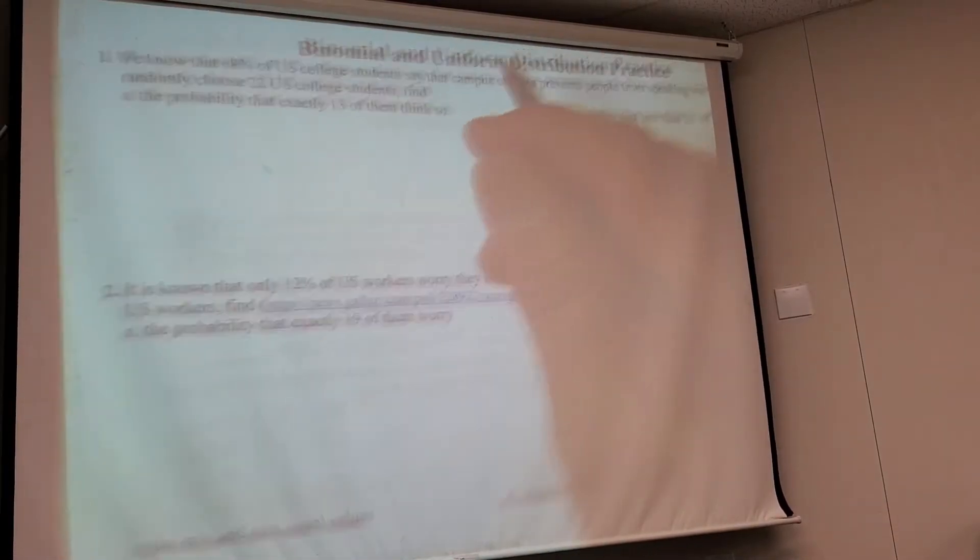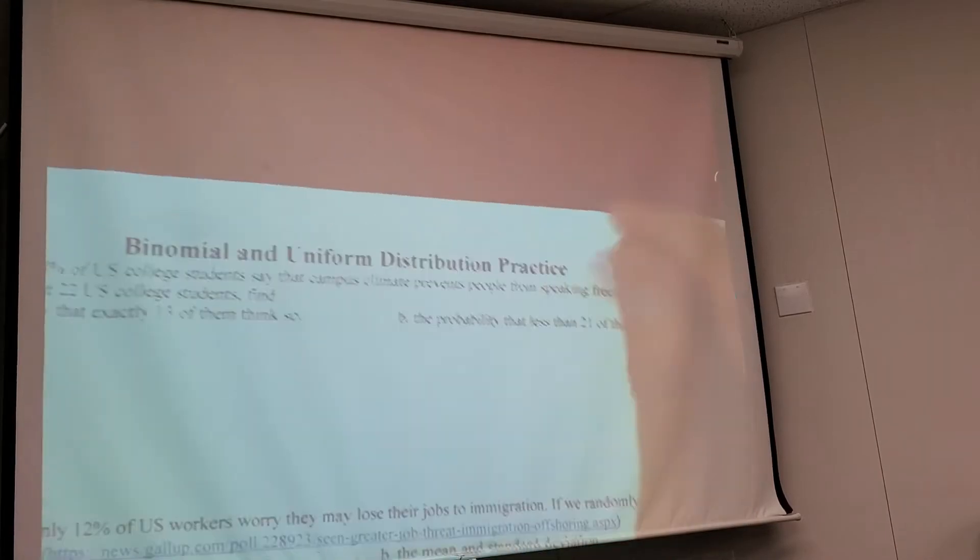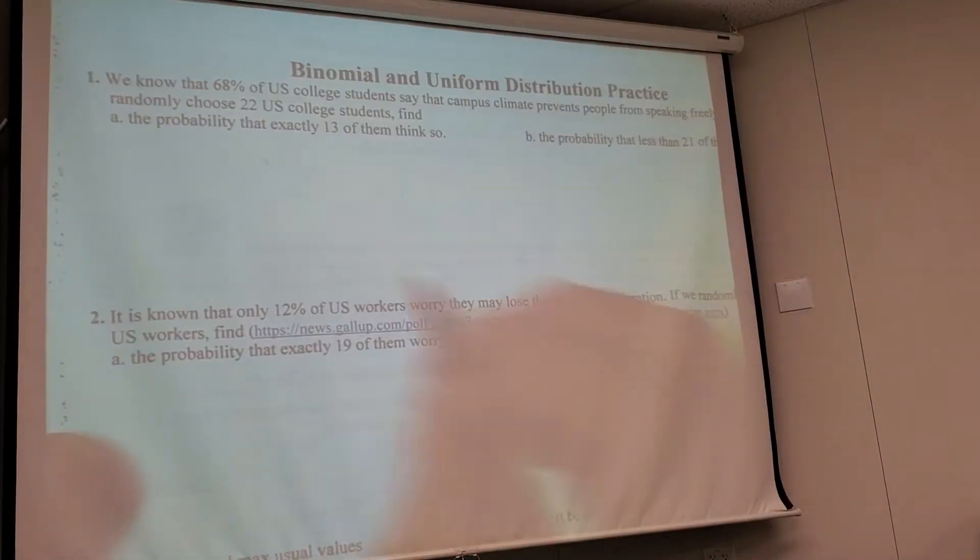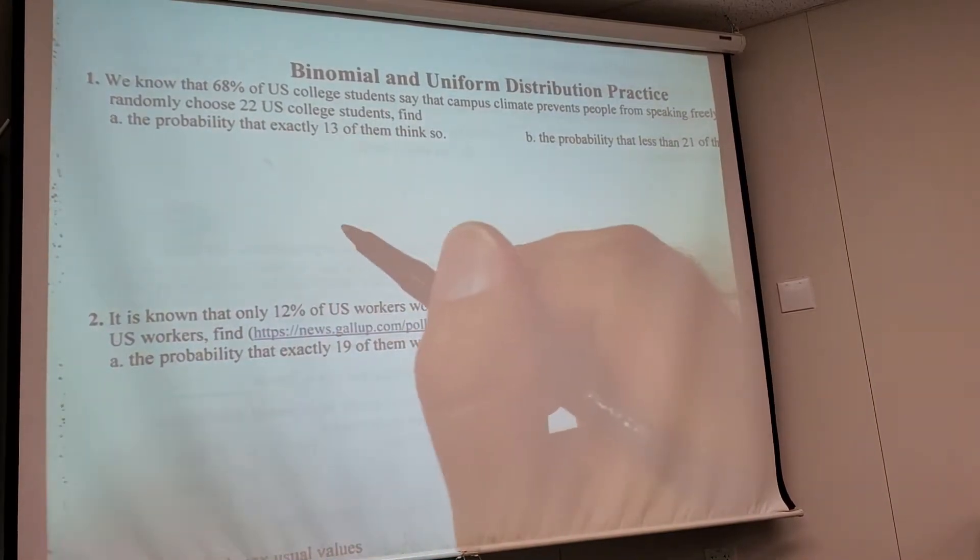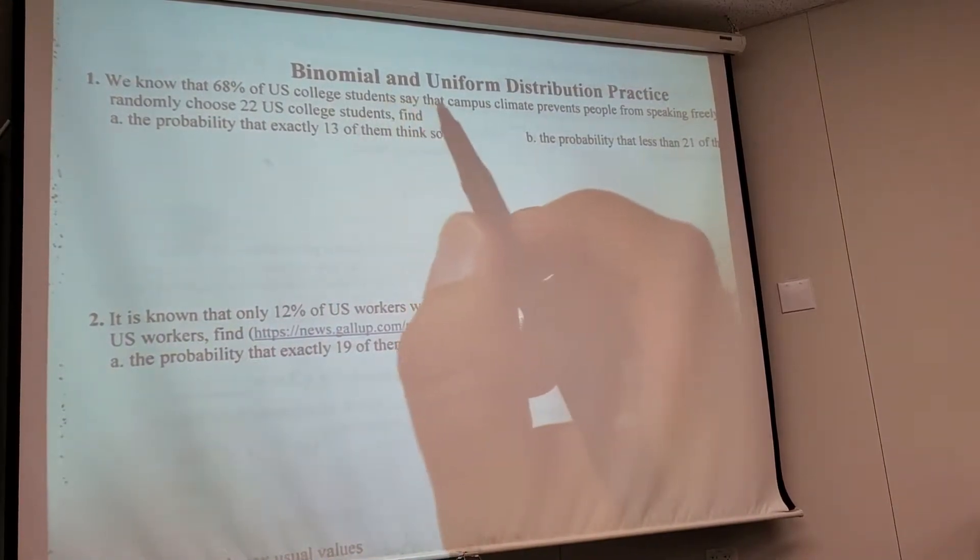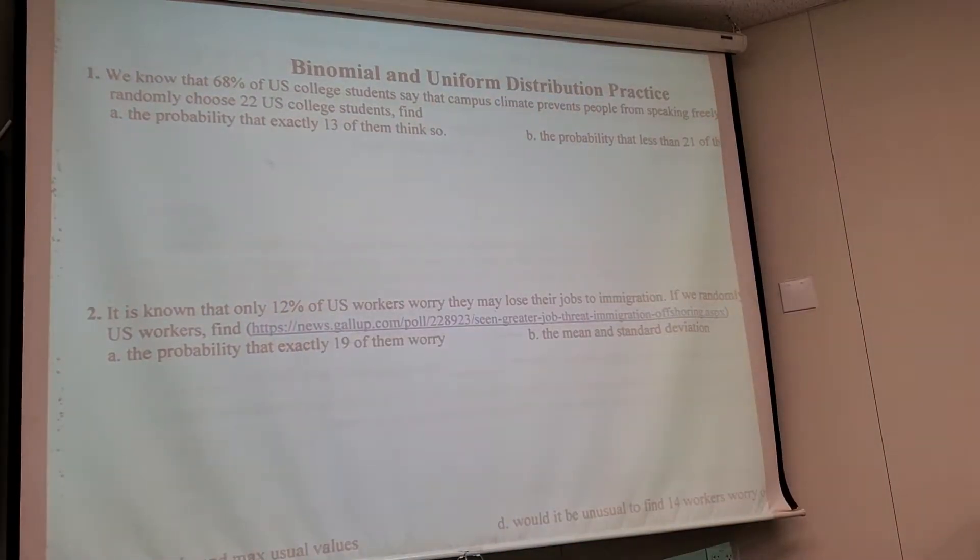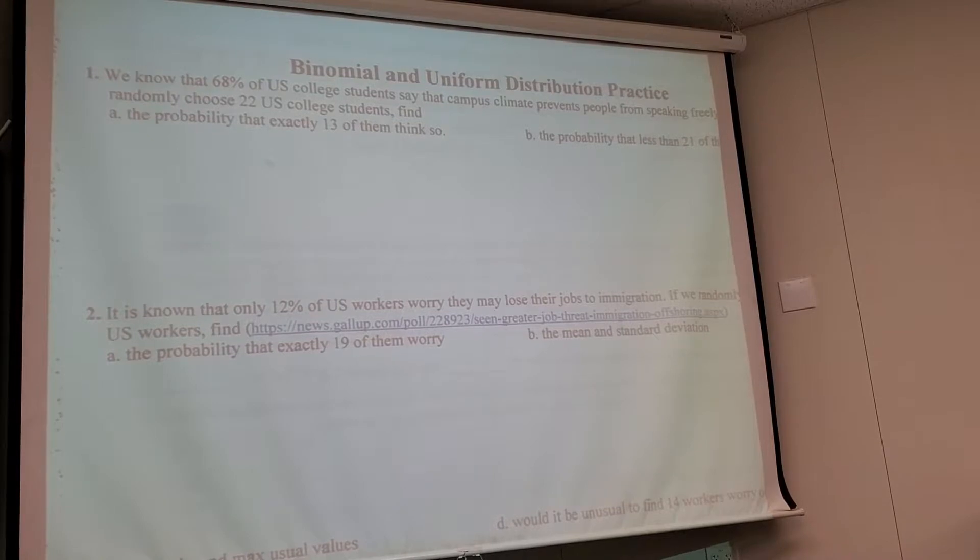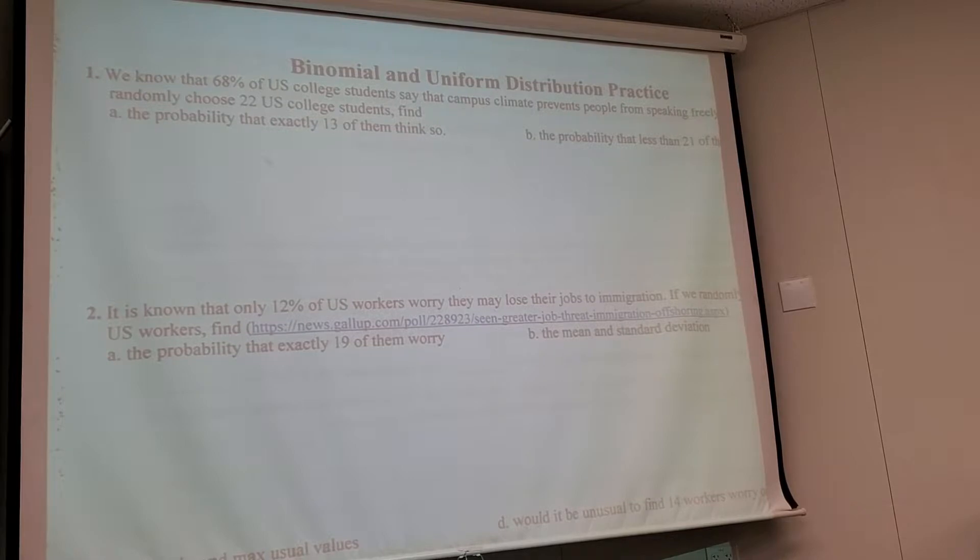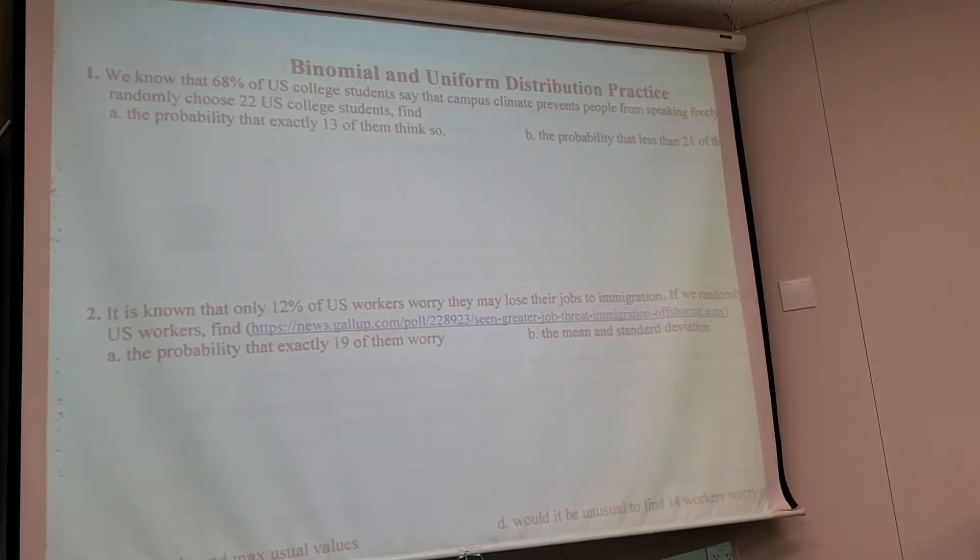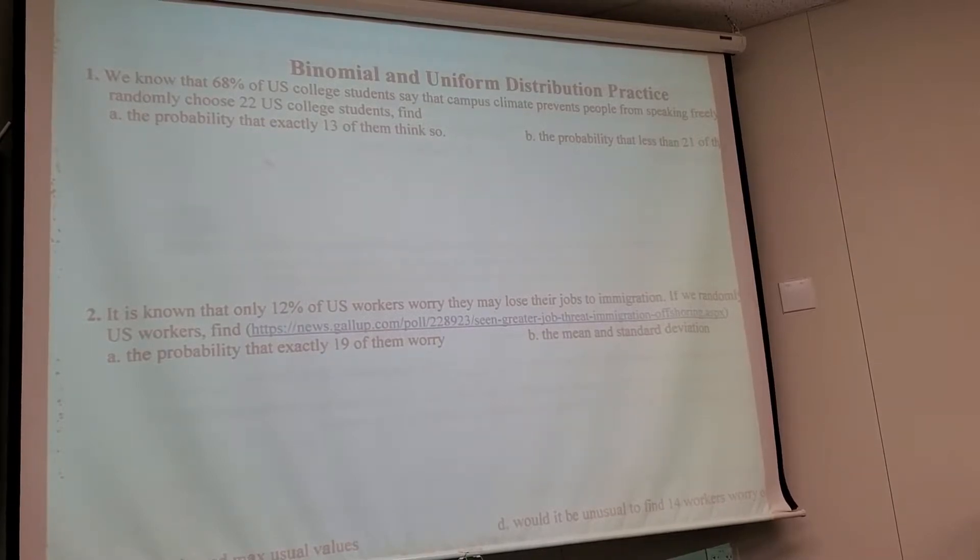All right guys, there we go. Hopefully it's the first one. You got to start realizing what type of problem it is. So I like to call binomial problems NPQ problems. 68% of college students say something, which means what percentage don't agree with that? 32. P and Q, right there, two situations. We choose 22. I got a total number. That's an NPQ problem.